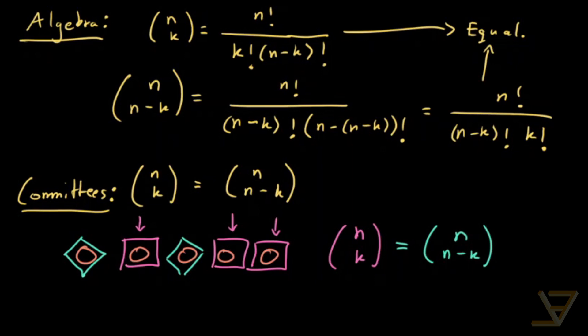So this is a combinatorial proof. It proves that choosing k things is the same as excluding n minus k things. It's the same number of ways of doing both. And I'll see you next time.